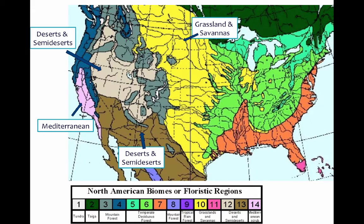Picking back up where we left off, this detailed map of the different climatic regions is really going to show a more detailed view of different areas within the bigger climatic regions that actually get different levels of precipitation.